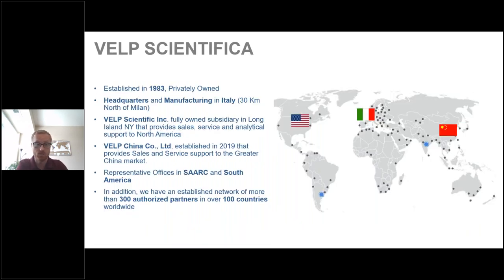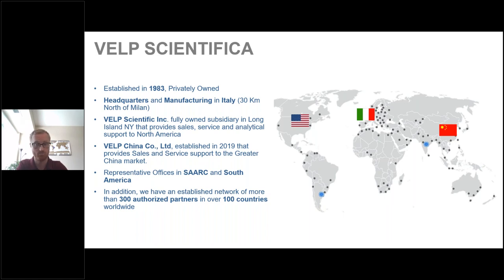To give a quick background on VELP Scientifico: the company was established in 1983 and is privately owned by the founding family. Headquarters and manufacturing are located in Italy, about 30 kilometers north of Milan. VELP Scientific Inc. is a subsidiary based out of Long Island, New York, providing sales, service, and analytical support to the North American market. We also have VELP China Co., established in 2019, plus representative offices in Argentina and India, and we work with over 300 authorized partners in over 100 countries.